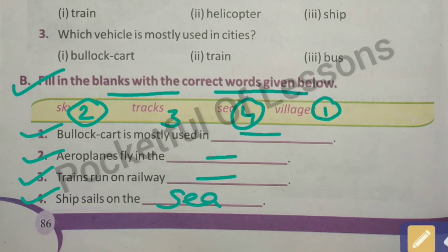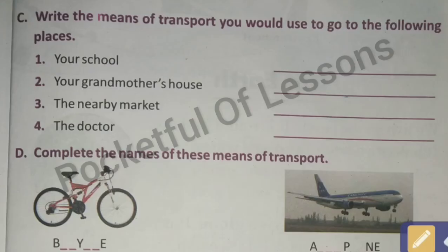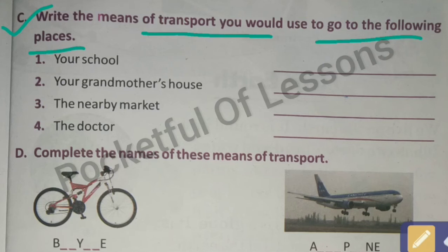Exercise C: write the means of transport you would use to go to the following places. You have to write the names of the means of transport that you use to go to these places. What are the places given here?